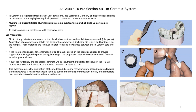Once the master cast is done, we can trim it, pour the opposing arch or opposing cast, and mount the case using either a face bow or a bite registration. For larger cases, it's recommended to use a semi-adjustable articulator — it's more accurate and allows different types of jaw movement, including lateral movement. Once the case is mounted, we can fabricate the dies by cutting and ditching them.